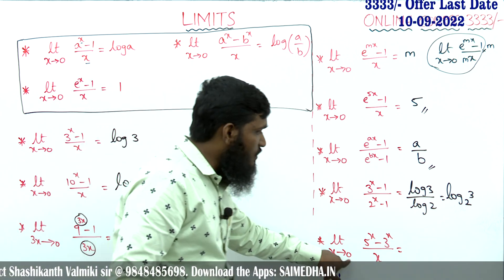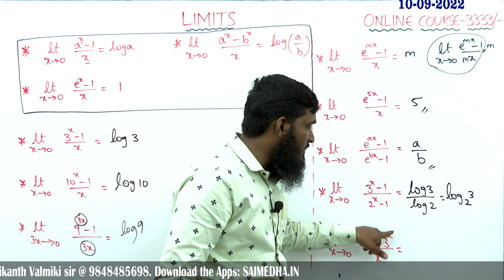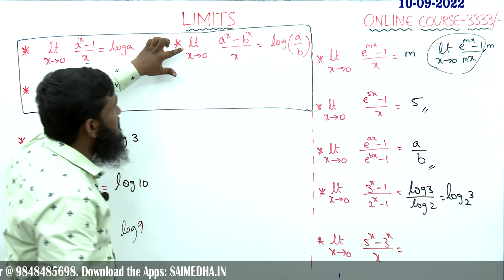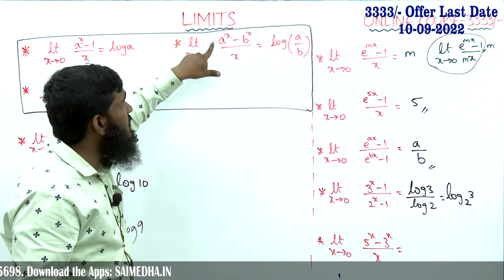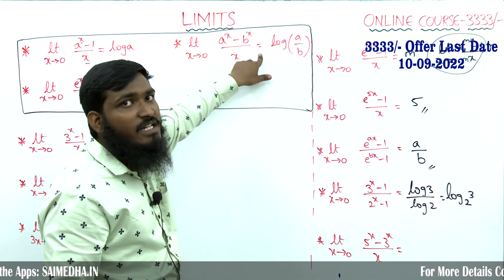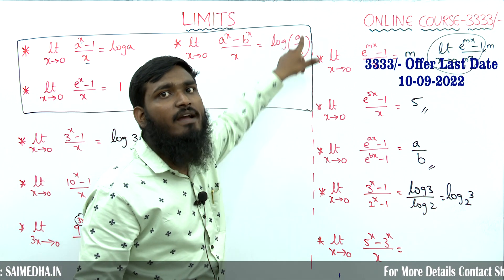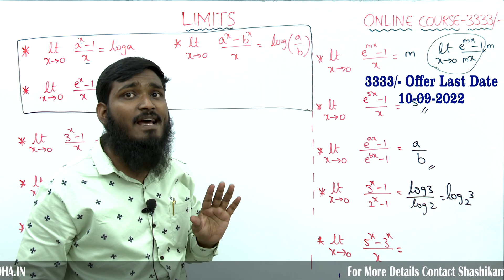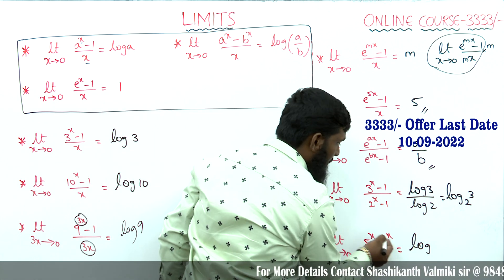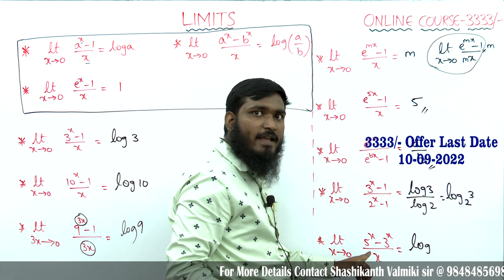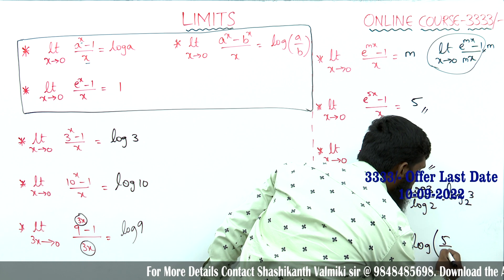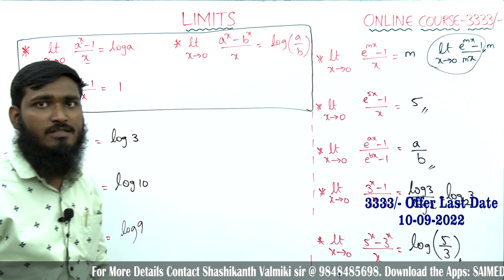Next: limit x tends to 0, 5^x minus 3^x divided by x. This is in the form of a^x minus b^x divided by x, which equals log(a/b). Here a equals 5 and b equals 3, so the answer is log(5/3).